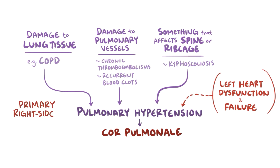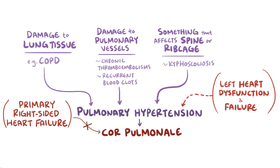Primary right-sided heart failure — which might happen after a right ventricular myocardial infarction, or as a consequence of pulmonary valve stenosis — would also not be considered cor pulmonale, as the underlying defect is related to the heart, not the lungs.